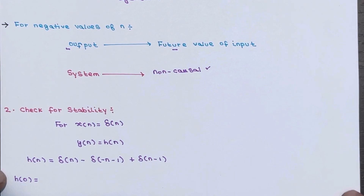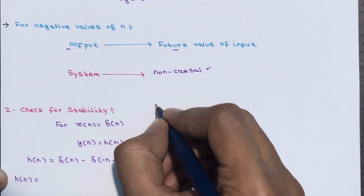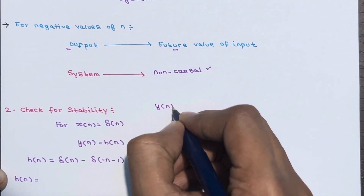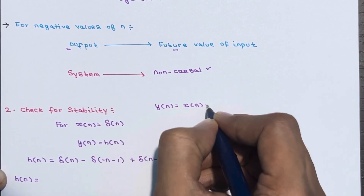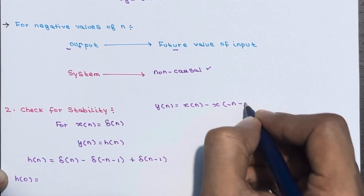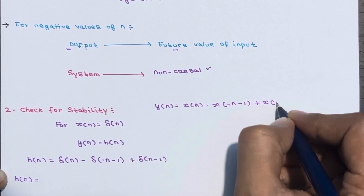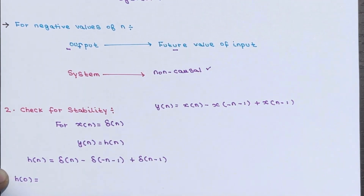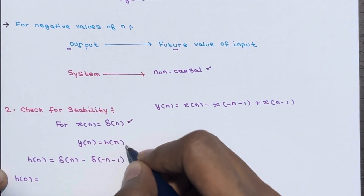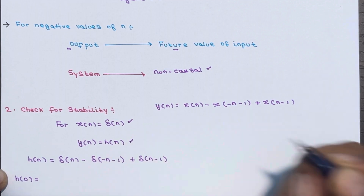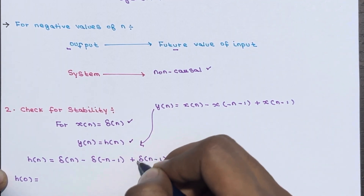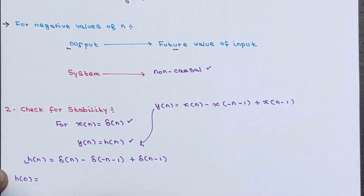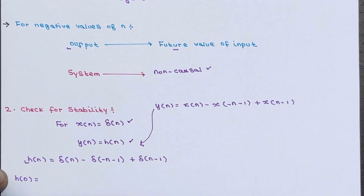Now check for stability. The equation is y(n) = x(n) - x(-n-1) + x(n-1). We are talking about an LTI system and have to check for stability. The input should be δ(n), so the output becomes the impulse response h(n). This equation becomes: h(n) = δ(n) - δ(-n-1) + δ(n-1).